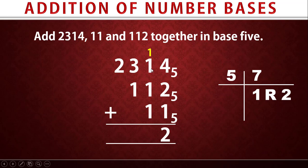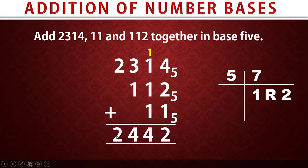Next stage: one plus one gives two, two plus one gives three, three plus one gives four. Four is less than five, so we write four directly. Next: three plus one gives four — four is less than five, write four directly. Next: two with nothing else — two is less than five, write two directly. Final answer: 2442 in base five.